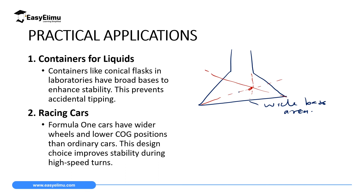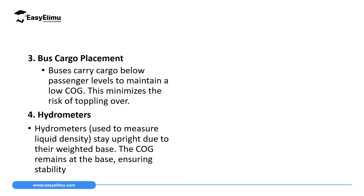Another application is racing cars, like Formula One cars. They have very wide wheels and a very low body, which gives them the lowest possible center of gravity and a very wide base, enhancing stability. The third application is bus cargo placement — buses carry cargo below passenger levels to maintain a low COG, with more mass at the bottom and less at the top, which prevents the bus from toppling over.